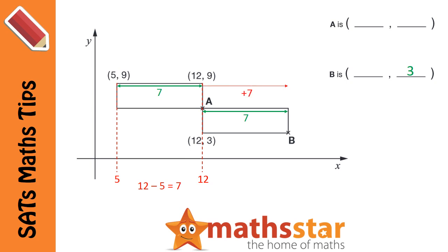So if we add 7 to 12, we'll get the x-coordinate of B, which is 19.